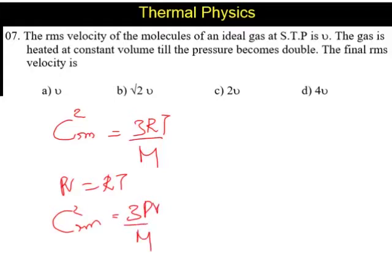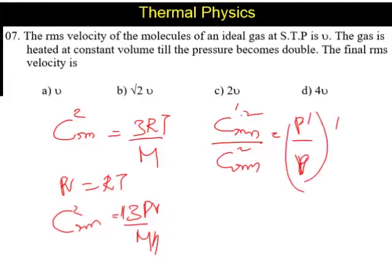Using this idea we can say the final RMS velocity to initial RMS velocity squared should be equal to—using this, because the volume and the mass, the pressure, and PV equals RT—so it is P'/P times V'/V. Because these are only the variables P and V.